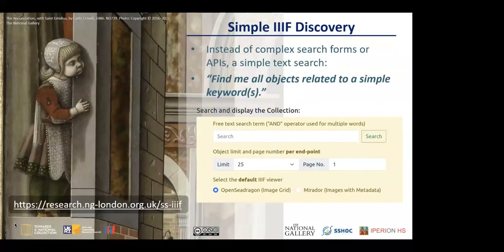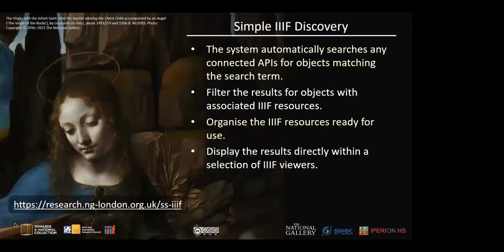Here is a link to the live simple IIIF discovery system, which will be repeated on several slides. Instead of complex search forms or having to go through multiple pages of API documentation, users are presented with a simple text search form and can ask: find me all objects related to a simple keyword. Users can add a search term, select the number of results per page, select the page number, and also select the default image viewer — OpenSeadragon or Mirador. The system will automatically search any connected APIs for matching objects.